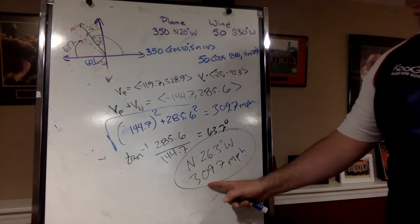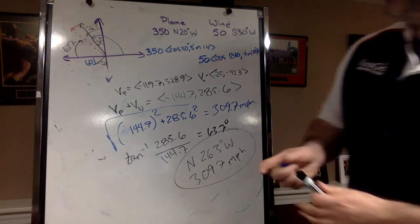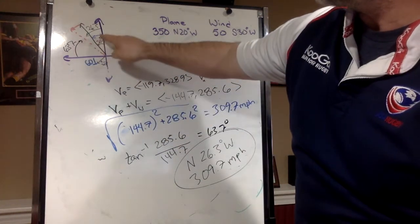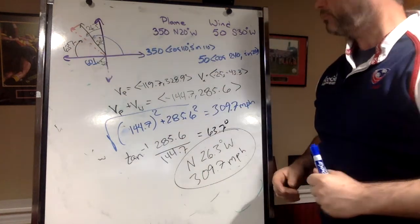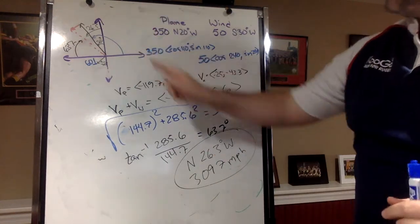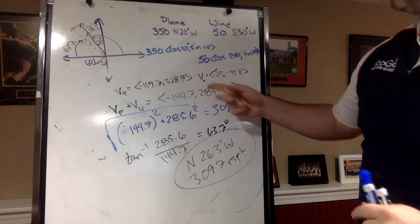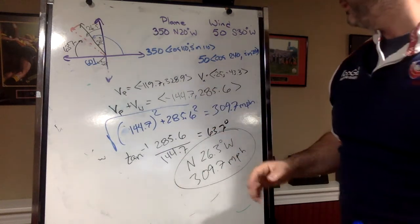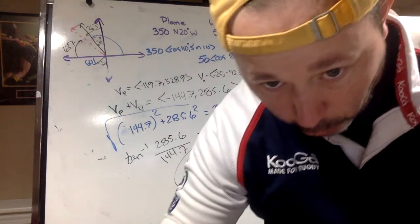So I have a speed of 309.7 with a bearing of 26.3, and that makes sense that we're a little bit west - we're 6.3 degrees west of where we were before the wind. All right, this is one where when you do these, draw your pictures, keep it neat, nice and organized, label it vp for plane or if it's a boat vb, whatever it is. All right, if you have any questions, hit me up. Remember, stay safe.